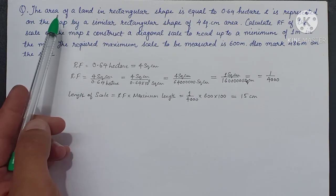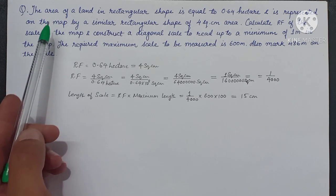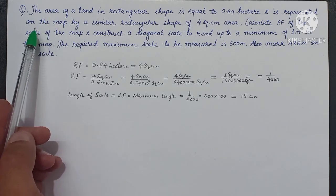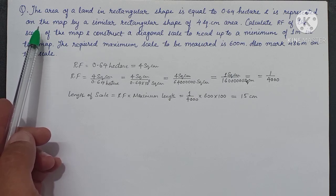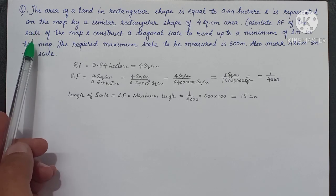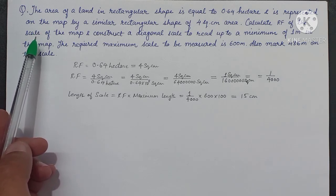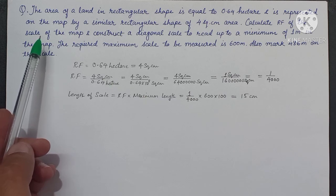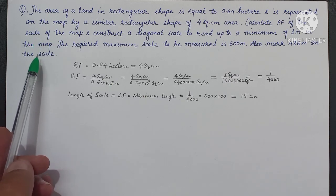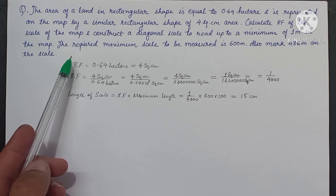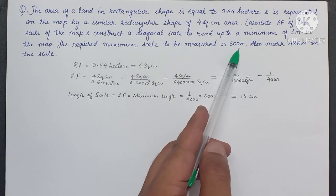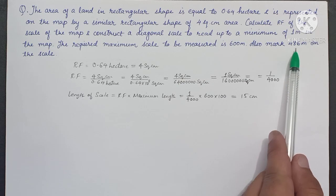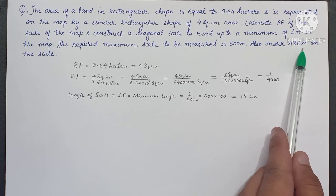The area of a land in rectangular shape is equal to 0.64 hectare and is represented on the map by a similar rectangle shape of 4 square centimeter area. Calculate the representative factor of the scale of the map and construct a diagonal scale to read up to a minimum of 1 meter. The required scale is to measure 600 meters; also mark 486 meters on the scale.